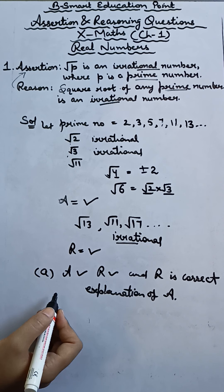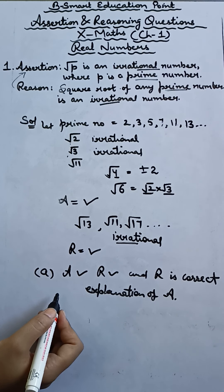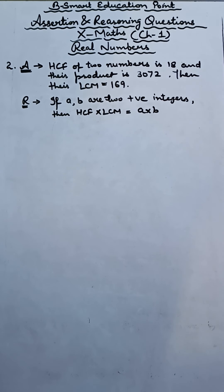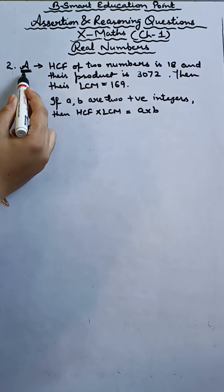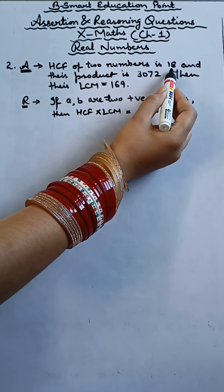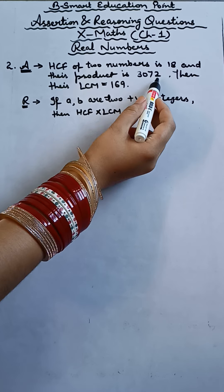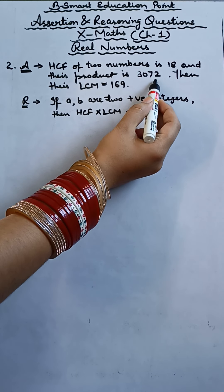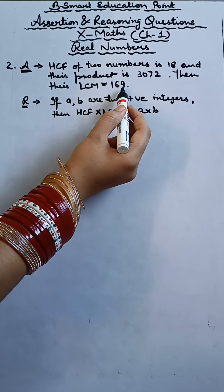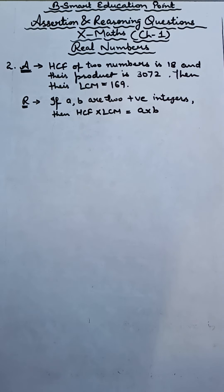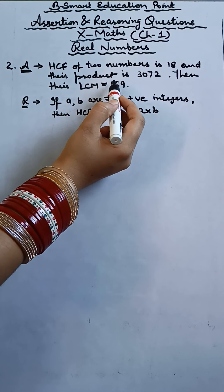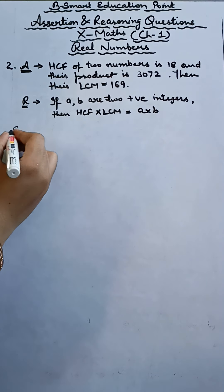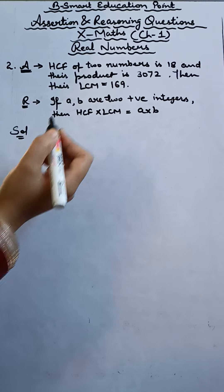For better understanding of options A, B, C, D, kindly check the previous video. This was our very first example related to chapter 1. Let's start doing the second one. Our second assertion and reasoning: what is the statement? The HCF of two numbers is 18 and their product is 3072. What is given to us?